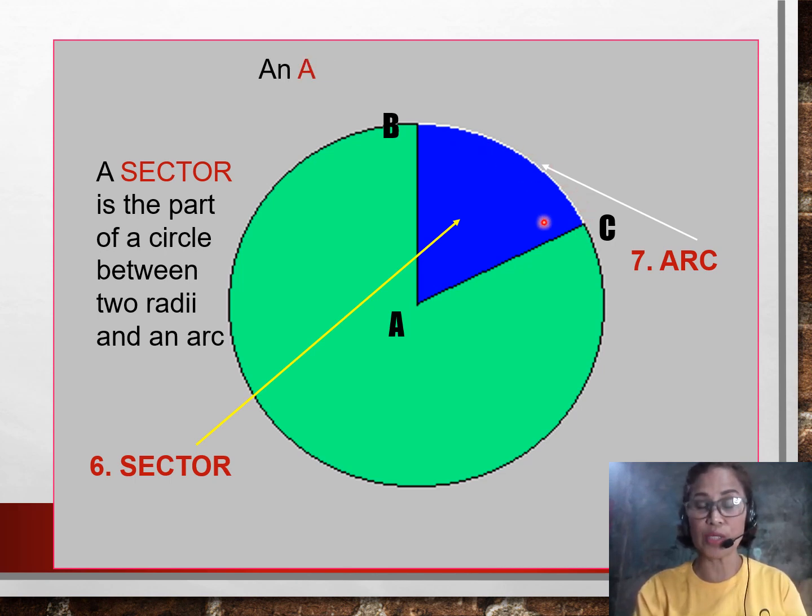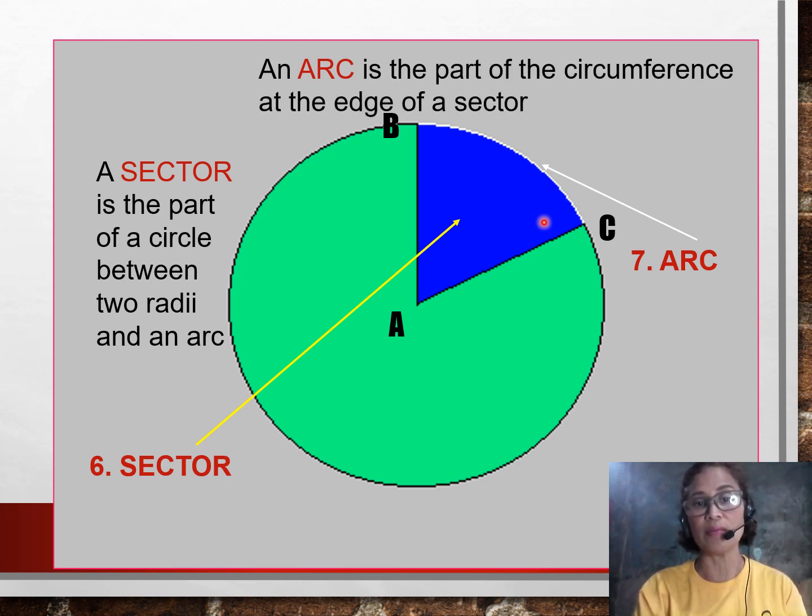Moving on to number seven, what is an arc? An arc is a part of a circumference at the edge of a sector. This white edge here is actually the arc. An arc is just a part of the whole circumference. Anyway, in my next video, I'm going to explain the differences of the arcs.